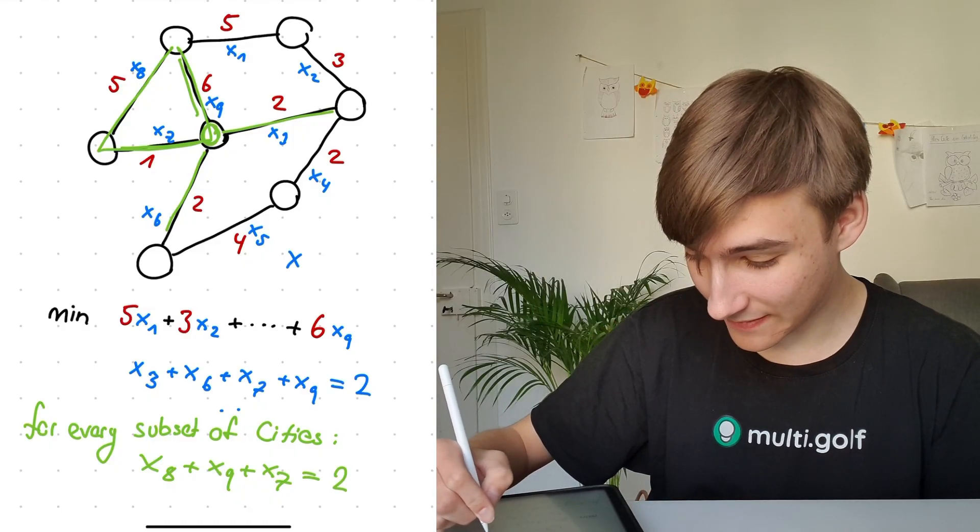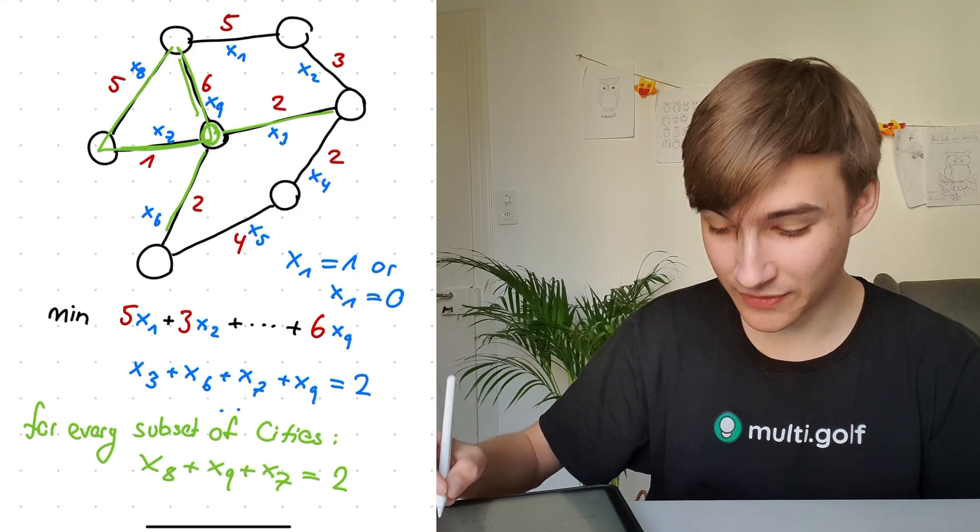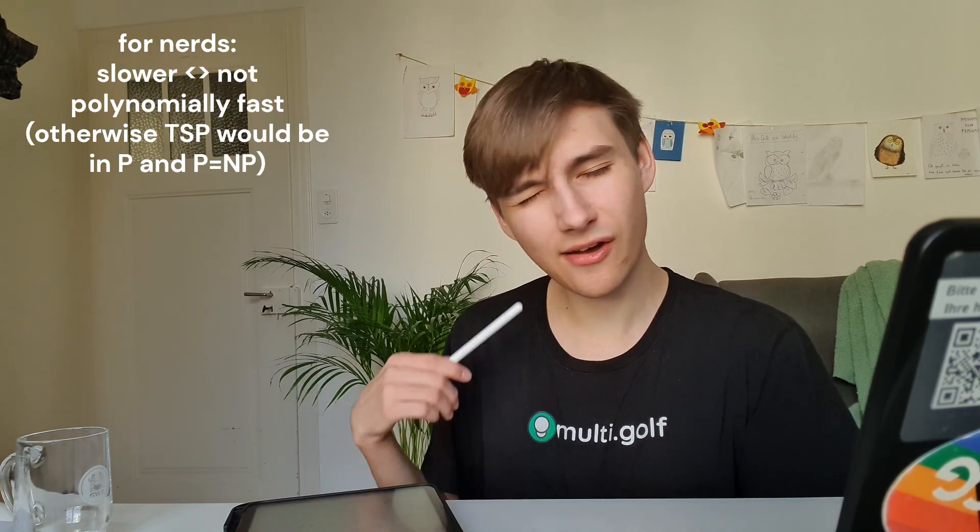However, there's a catch. The variables must either be zero or one, so we need more constraints - we need x1 to be either zero or one. As you may notice, that's not a linear constraint. So we need to cheat a little bit and say all variables must be integers - whole numbers. Fortunately, there are smart people who figured out good algorithms to solve this even with whole-number solutions. They are a bit slower, but they still work.